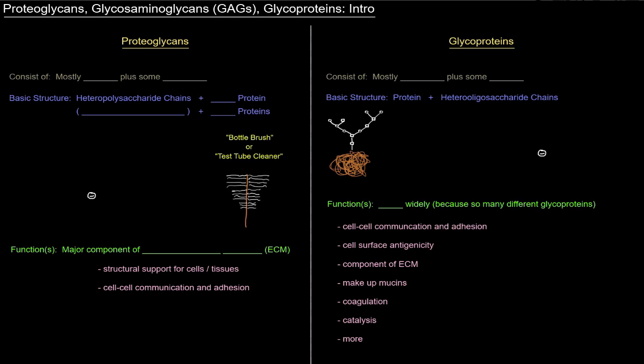So let's start off with proteoglycans. What are they? Well, they are kind of what they sound like. They are glycans with proteo. So basically, they are mostly carbs with some protein. They are glycans, but they've got some proteo. So they are mostly carbs, mostly carbohydrates, plus some protein component.